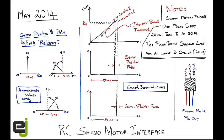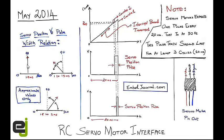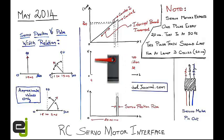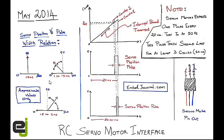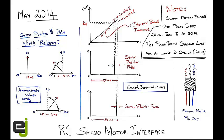The servo position is directly proportional to the width of the pulse that you are going to be giving in the signal pin. When you give a servo motor a 1.5ms width pulse, the servo horn points to 90 degrees. If you reduce the width from 1.5ms to 1ms, it goes from 90 degrees to 0 degrees. Similarly, if you increase the pulse from 1.5ms to 2ms, it goes from 90 degrees to 360 degrees. So the pulse should vary from 1ms to 2ms to produce a variation from 0 degrees to 360 degrees.